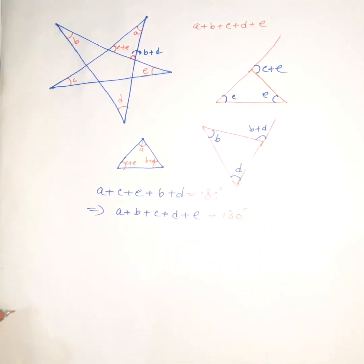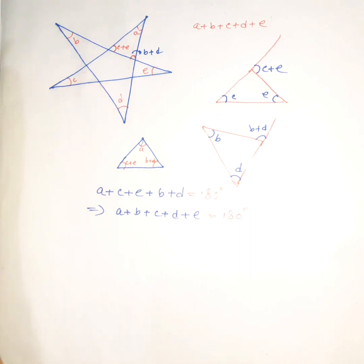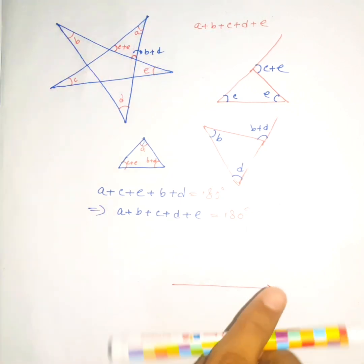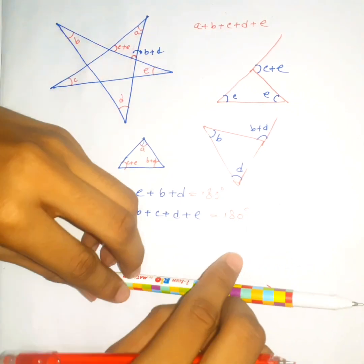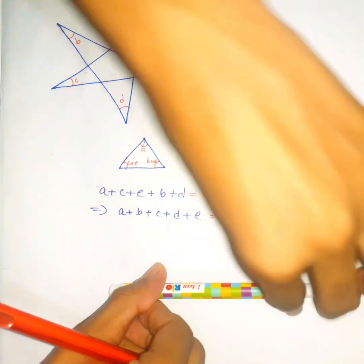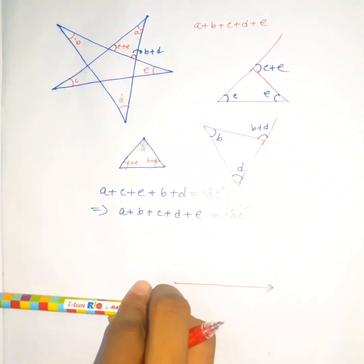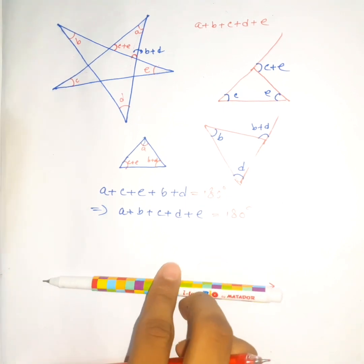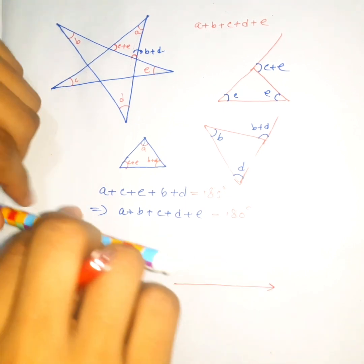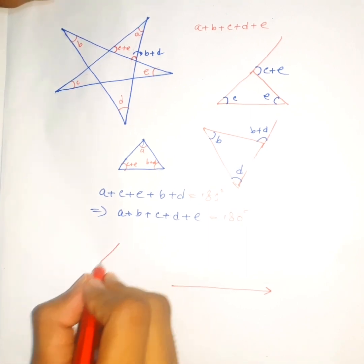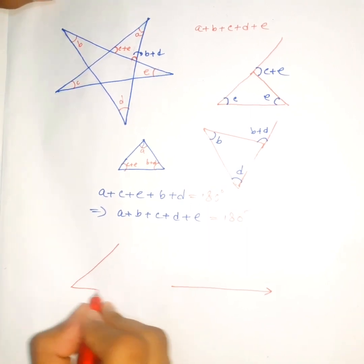We can also do it another way. If I put this pen on this line and rotate it 180 degrees, the pen will face the opposite direction. We are going to use that idea — first let's draw a star.